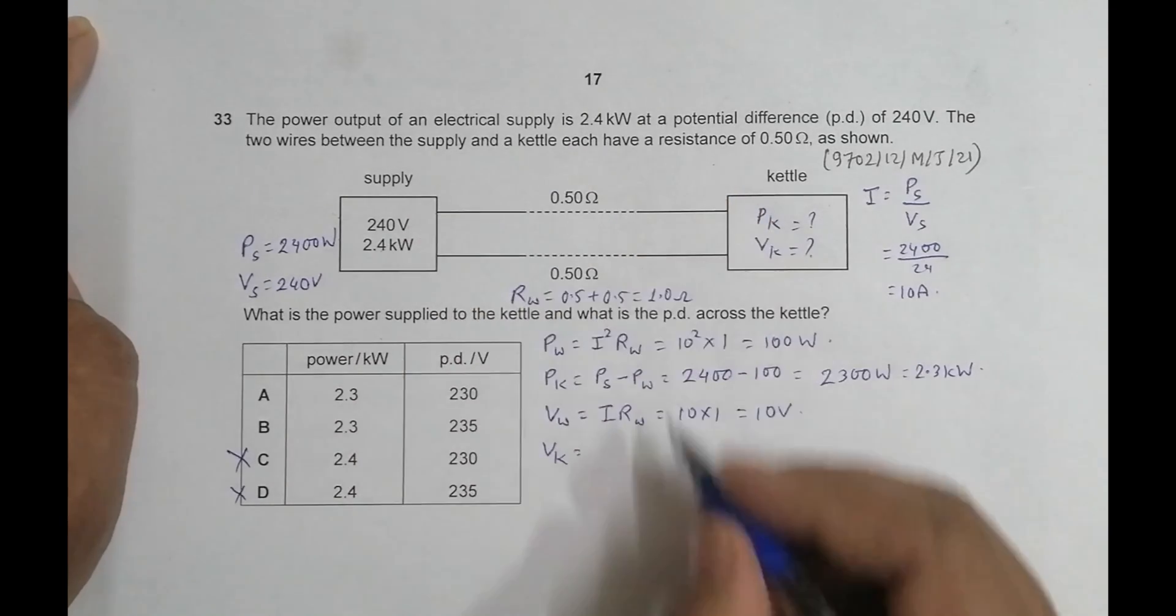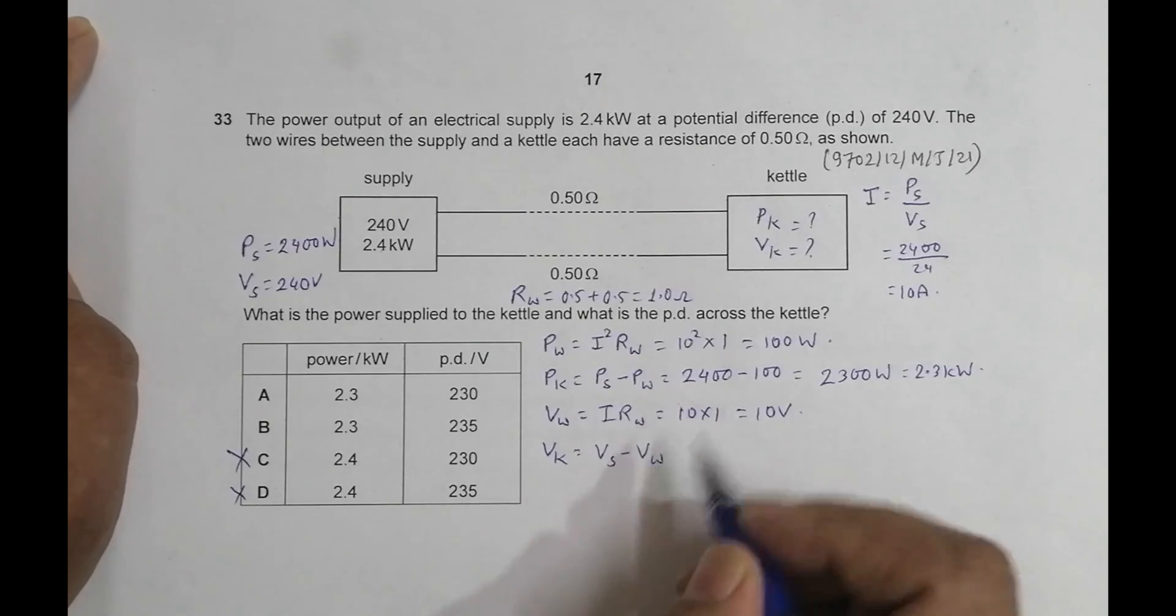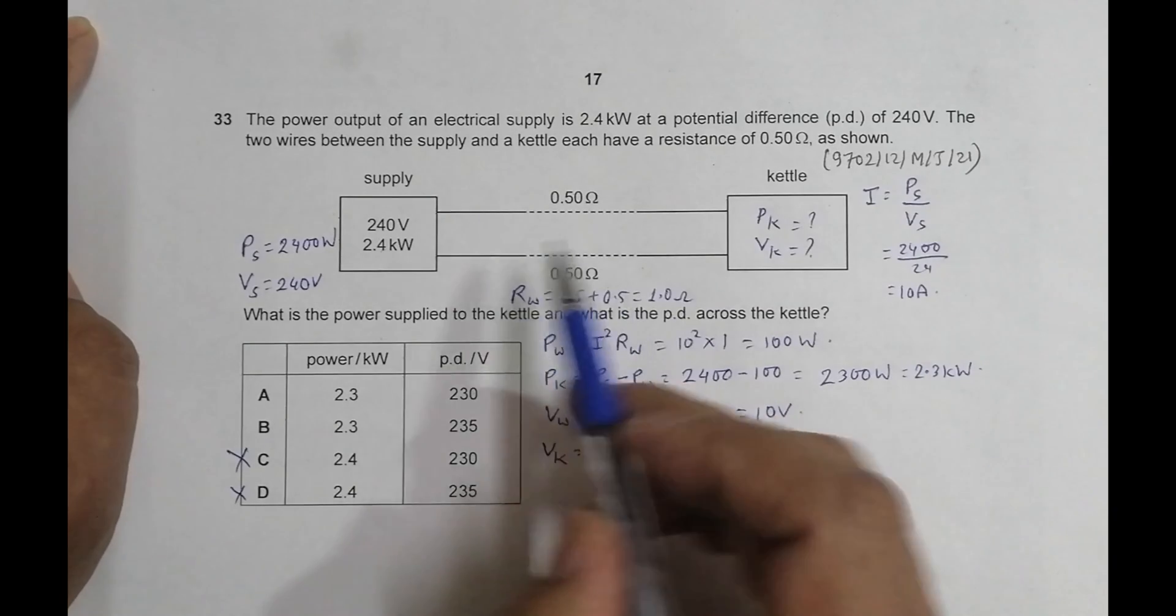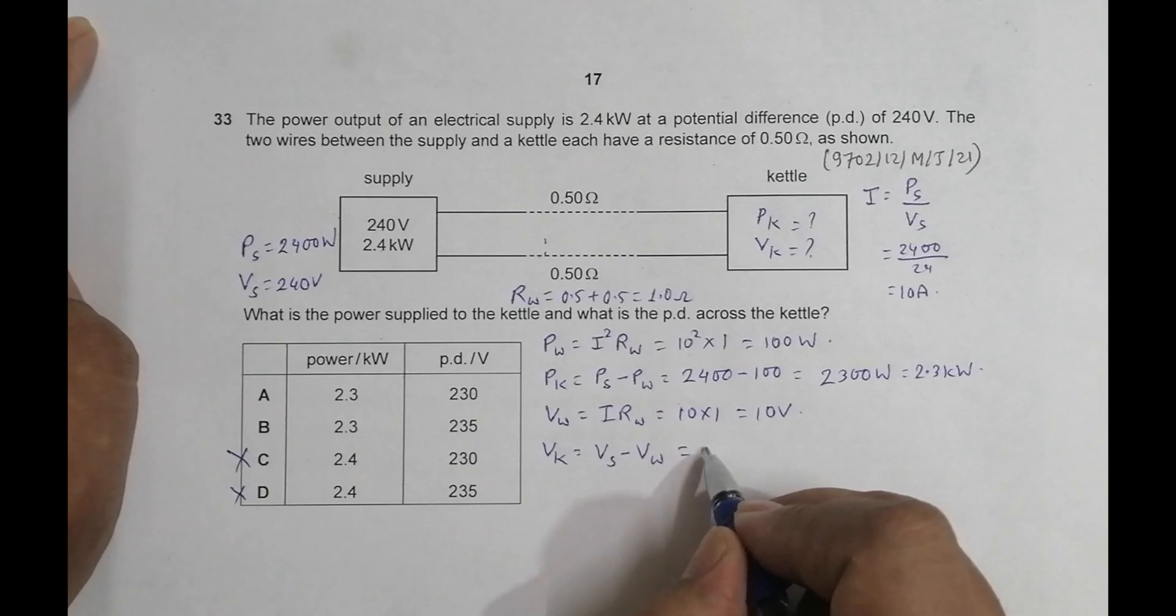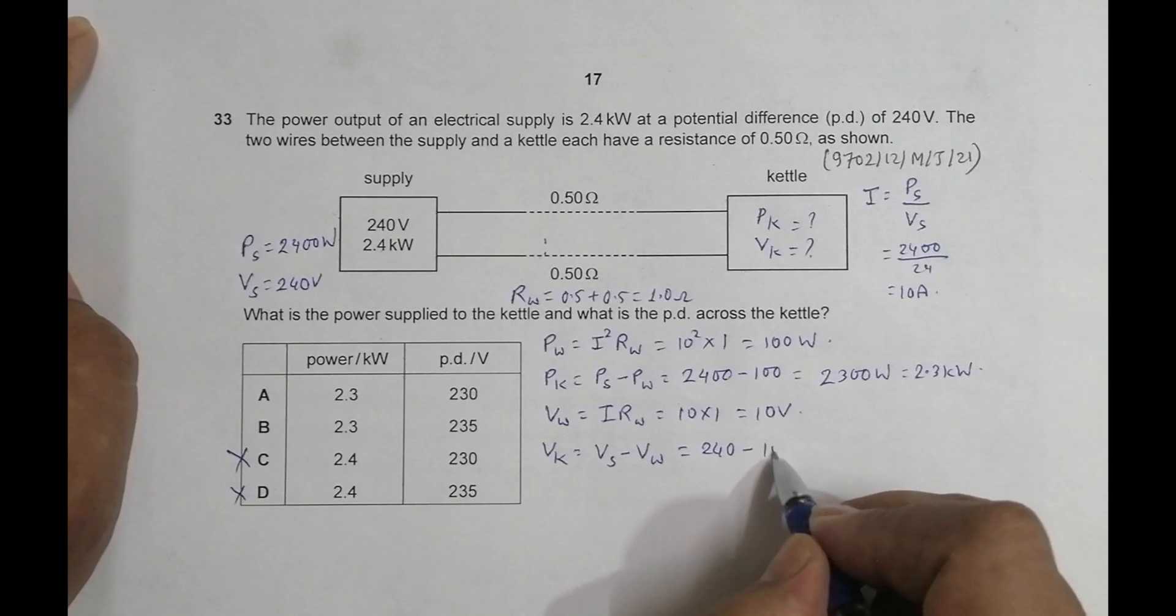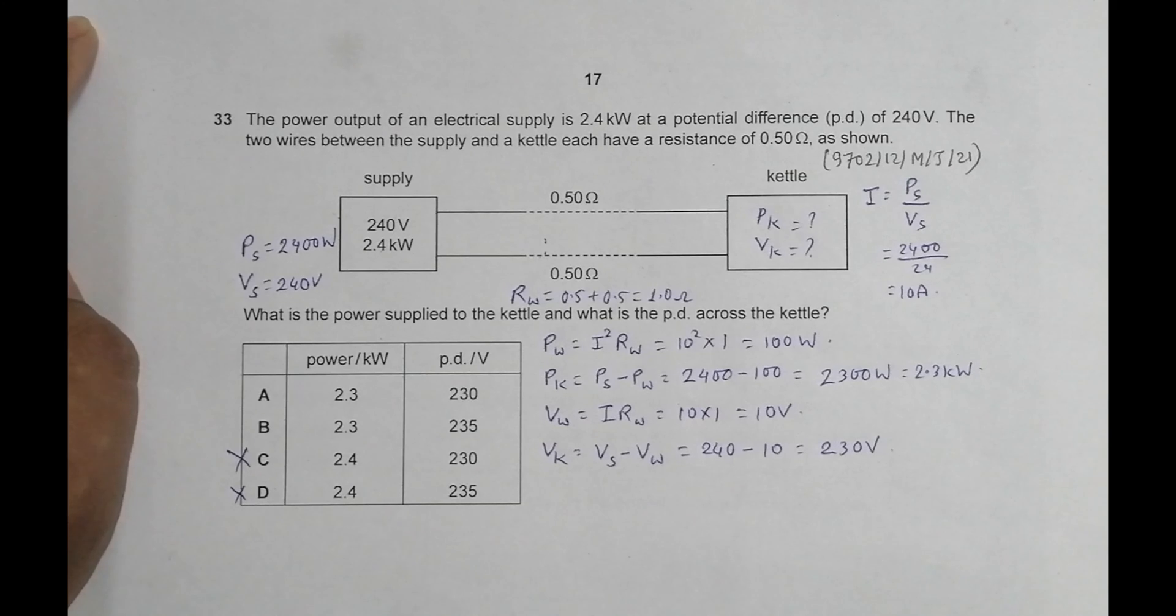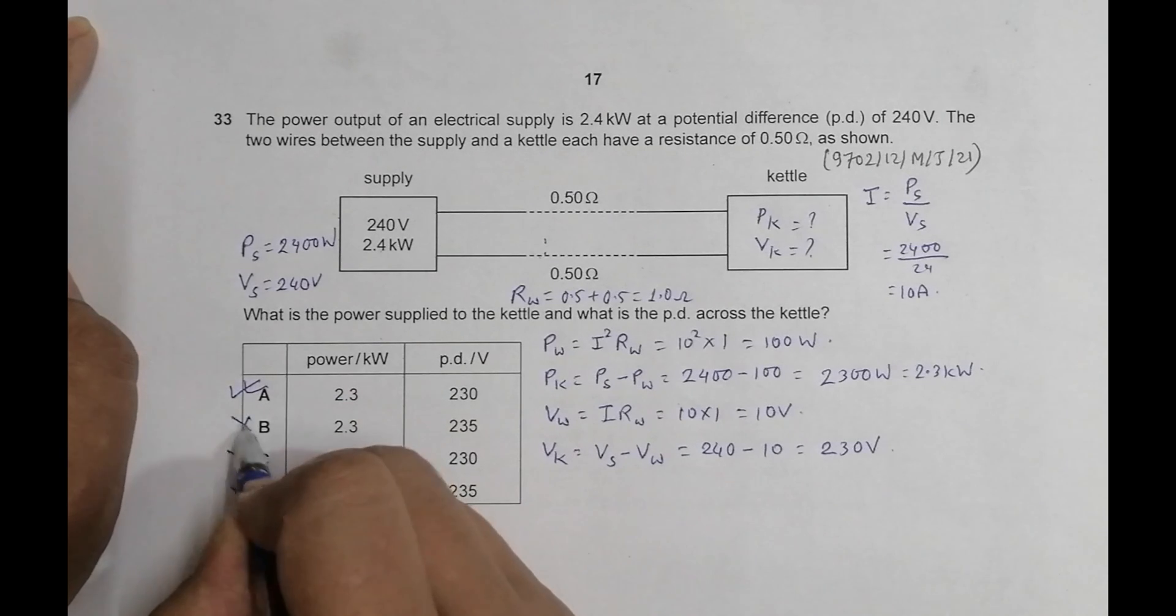Because it gets energy and that energy which remains after providing to the wires. So it will be equal to V_s is 240 volts minus V_wires is 10 volts, which gives us 230 volts. So the choice would be choice number A is the correct choice and B is the incorrect choice.